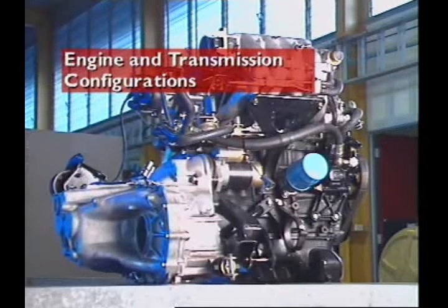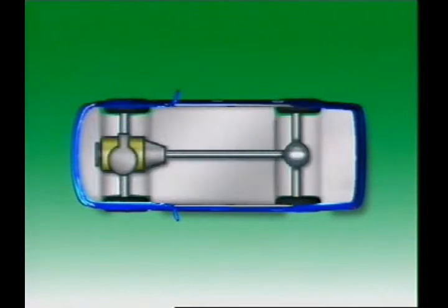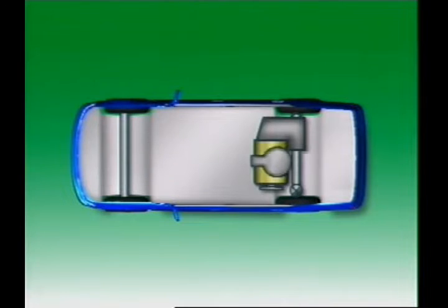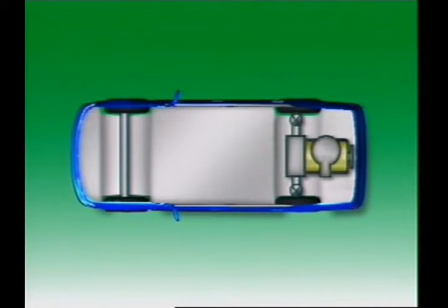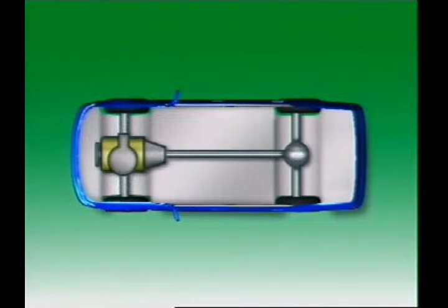This section examines engine and transmission configurations. An engine can be located at the front, middle, or rear of a vehicle. An engine located at the front can be mounted longitudinally and can drive either the front or the rear wheels.